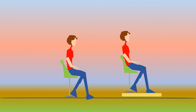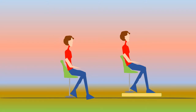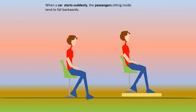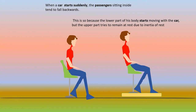Now let us see what happens when a vehicle starts suddenly. The upper part of the body is pushed back. When a car starts suddenly, the passengers sitting inside tend to fall backwards. This is because the lower part of the body starts moving along with the car, but the upper part tries to remain at rest due to inertia of rest. The lower part of the body will move along with the car.